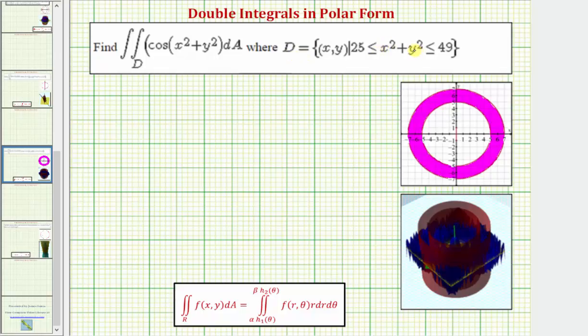D is a region where x squared plus y squared is greater than or equal to 25 and less than or equal to 49.